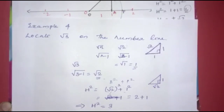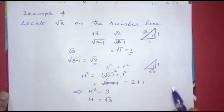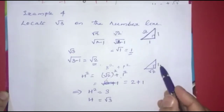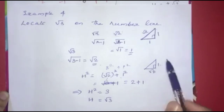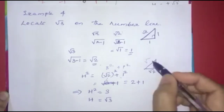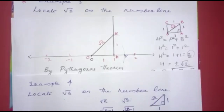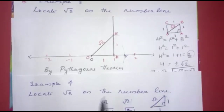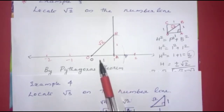That is h² = 3, so h = root 3. Now we have root 3. That is: root 2 as base, 1 as perpendicular, right triangle — the hypotenuse is root 3. Now we have root 3 on the number line, building on root 2.